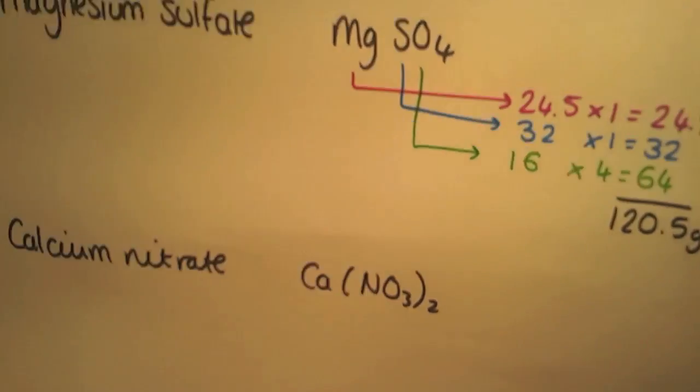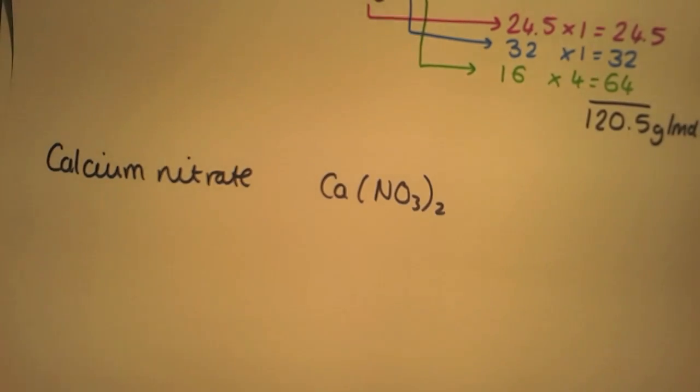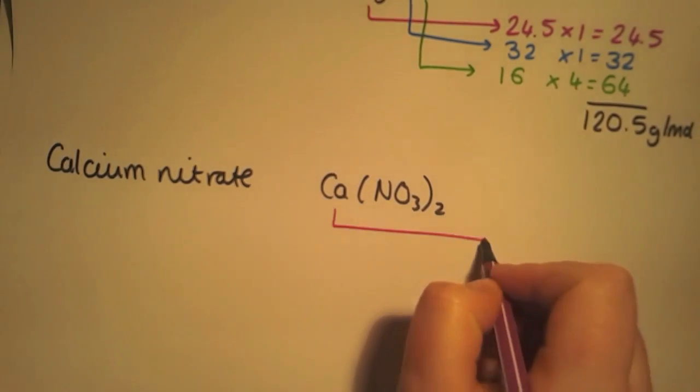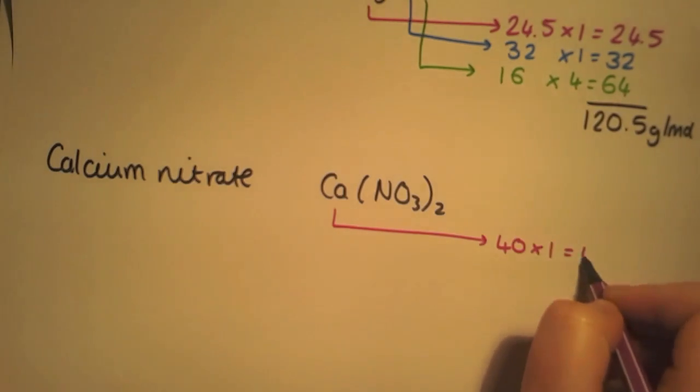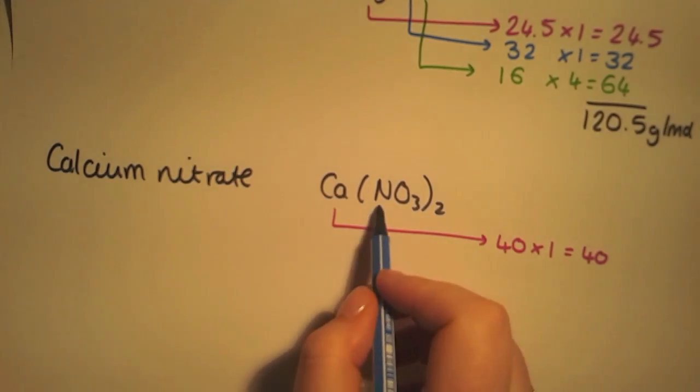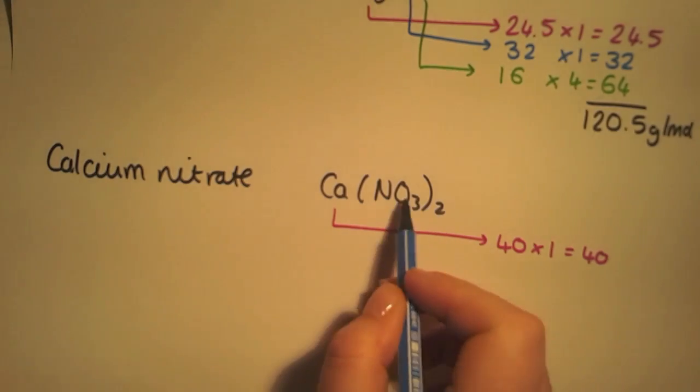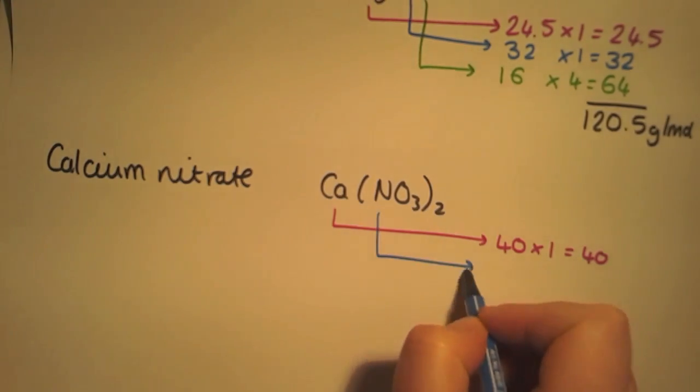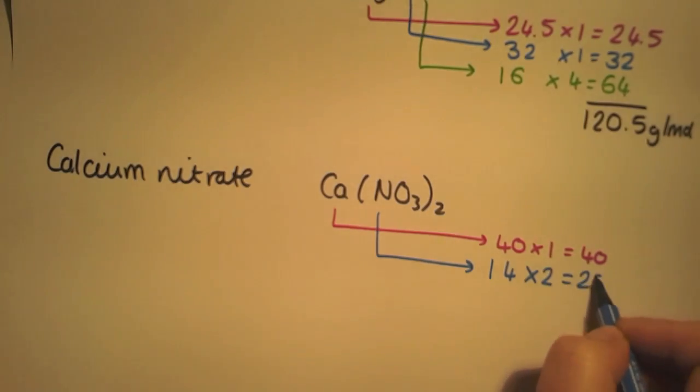In the final example, we have calcium nitrate. In this example, we have one calcium, which has a relative atomic mass of 40. We have nitrogen, but as you can see we've got brackets around the nitrate with a 2 here. That means we have two nitrogens. Nitrogen has a relative atomic mass of 14. Multiply it by 2 to give us 28.